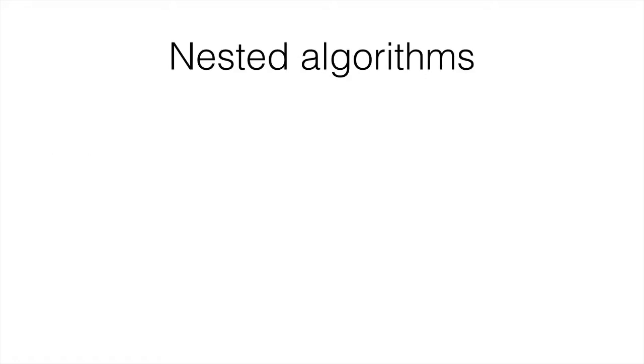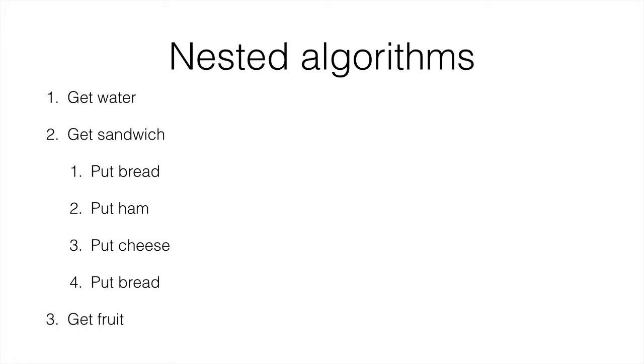You can nest the algorithms, just in case you wanted to make a breakfast, for example. You'd get water, get a sandwich, which would be bread, ham, cheese, then bread again, and then get some fruit, and that would be your breakfast.